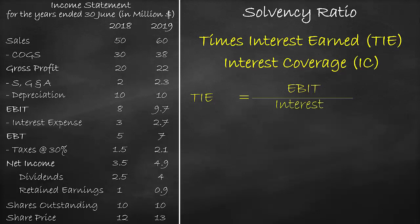We get both the earnings before interest and tax, also known as EBIT, and interest from the income statement. Let's calculate the times interest earned ratio for the year 2018. EBIT is equal to $8 million divided by the interest of $3 million, which is equal to 2.67 times.